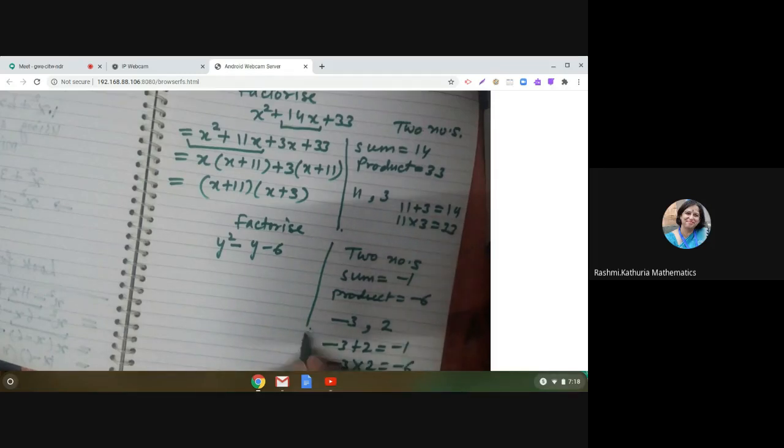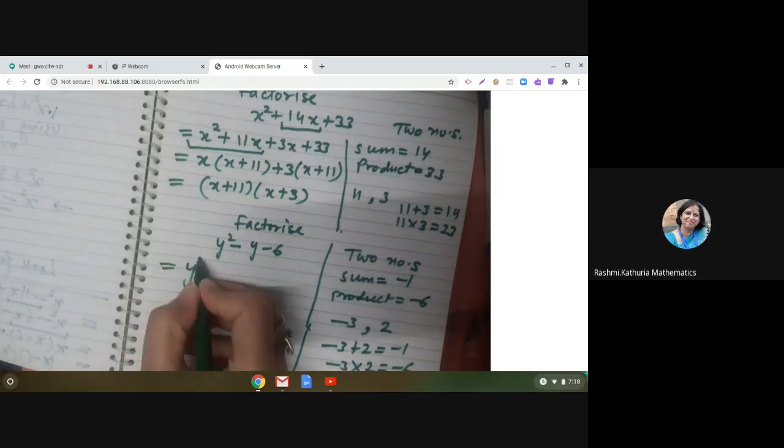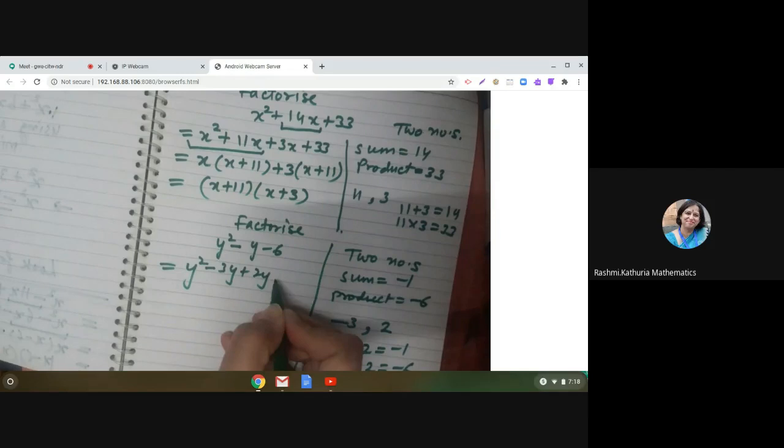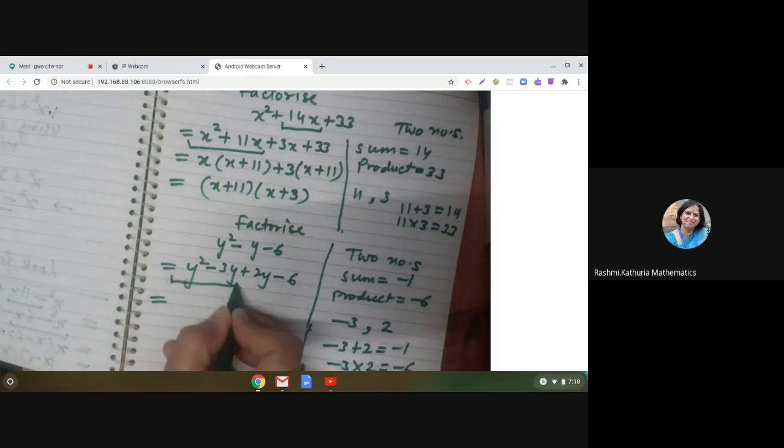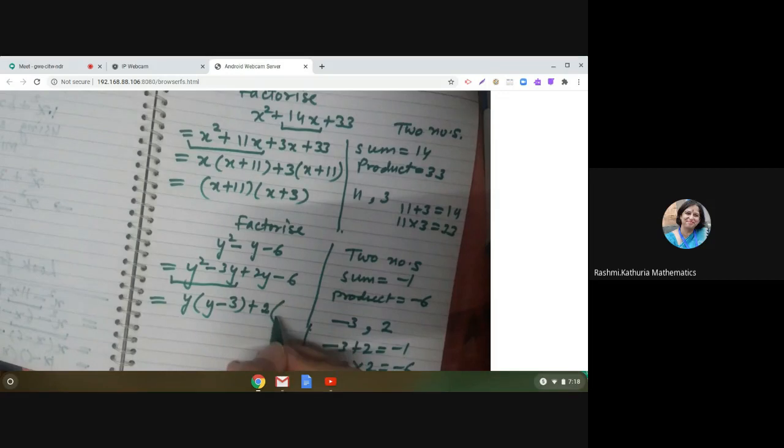So how we will write this? y square minus 3y plus 2y minus 6. Take common y from the first two terms. You get y minus 3 plus 2 is common in the next two terms. We get 2 into y minus 3.